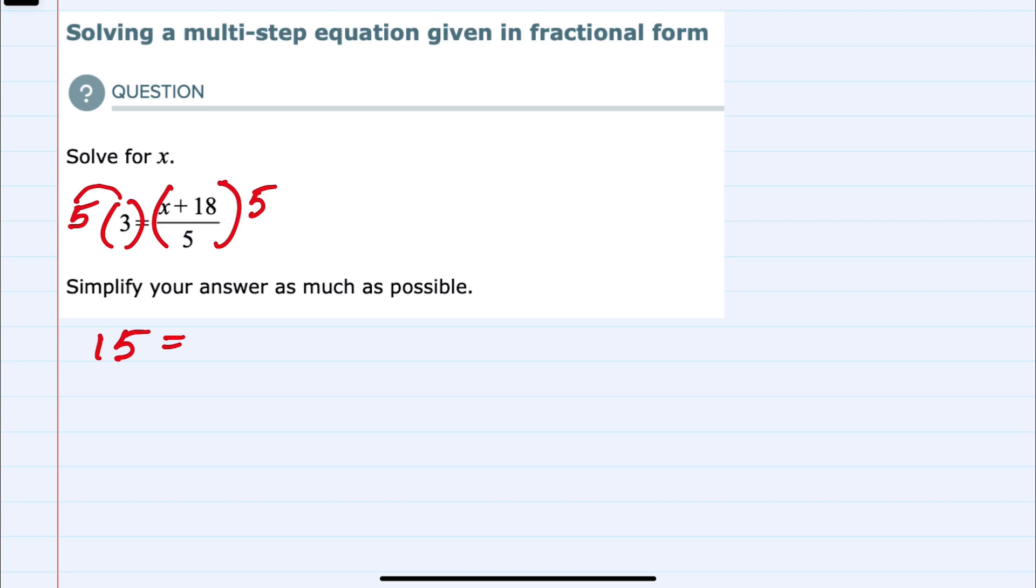On the right hand side of the equation, the reason that I'm multiplying by 5 is because this 5 in the denominator and the 5 that I'm multiplying by are going to cancel. That leaves me with the x plus 18 in the numerator since I've canceled out the denominator.